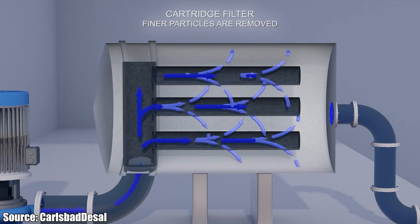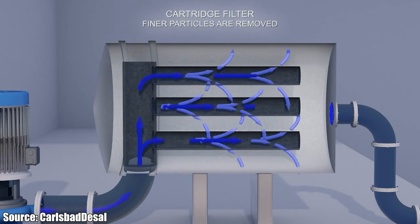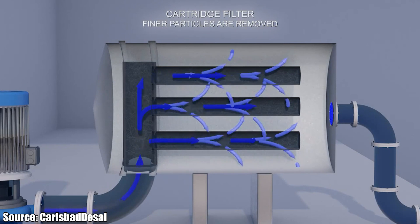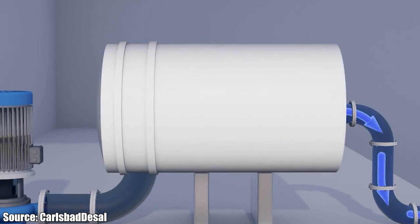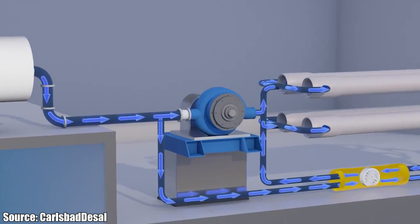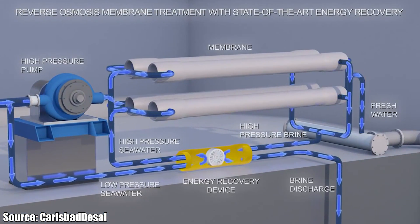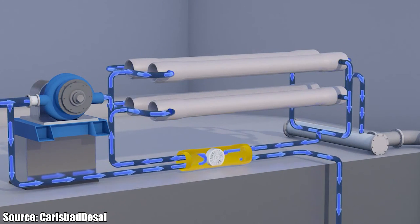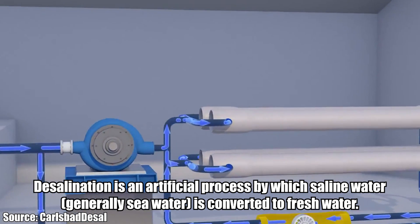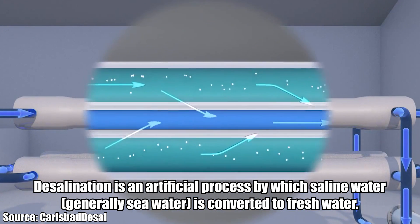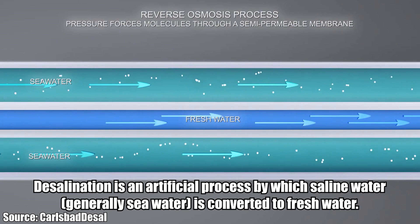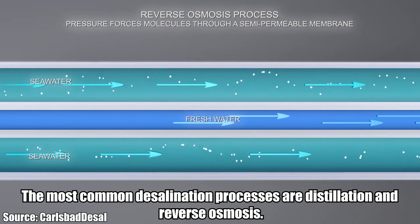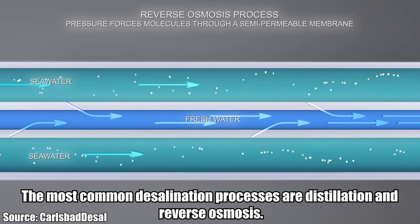Desalination is currently expensive compared to most alternative sources of water. However, there is growth in desalination for agricultural use in highly populated areas such as Singapore. Desalination also provides a method to produce fertilizer from the salt that is removed in the process. It is an artificial process by which saline water — generally seawater — is converted to fresh water, most commonly through distillation and reverse osmosis.